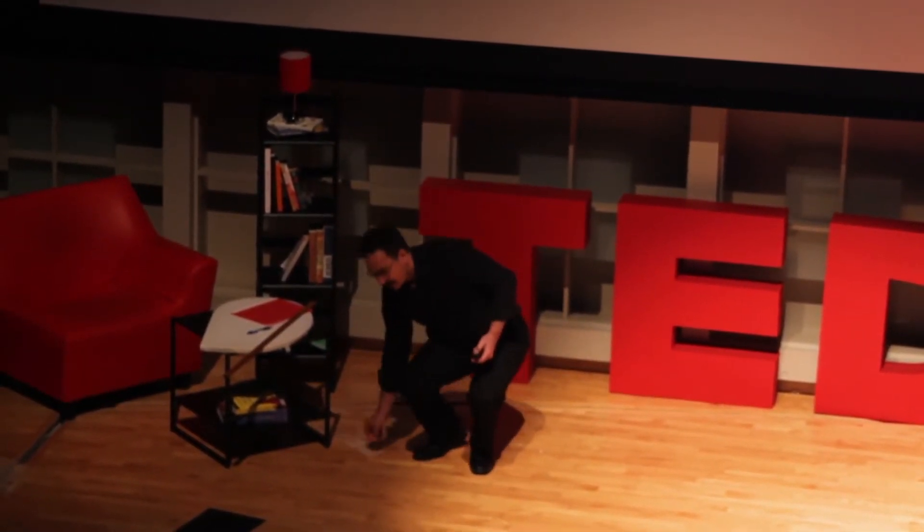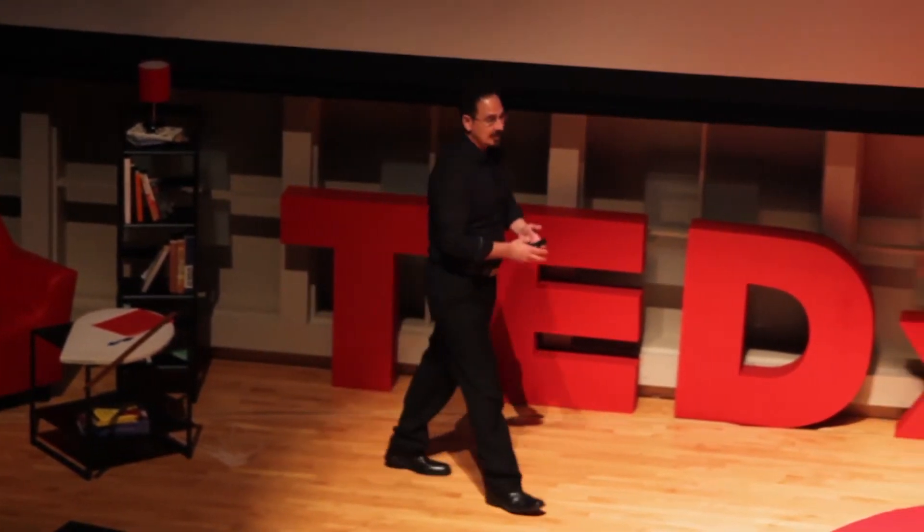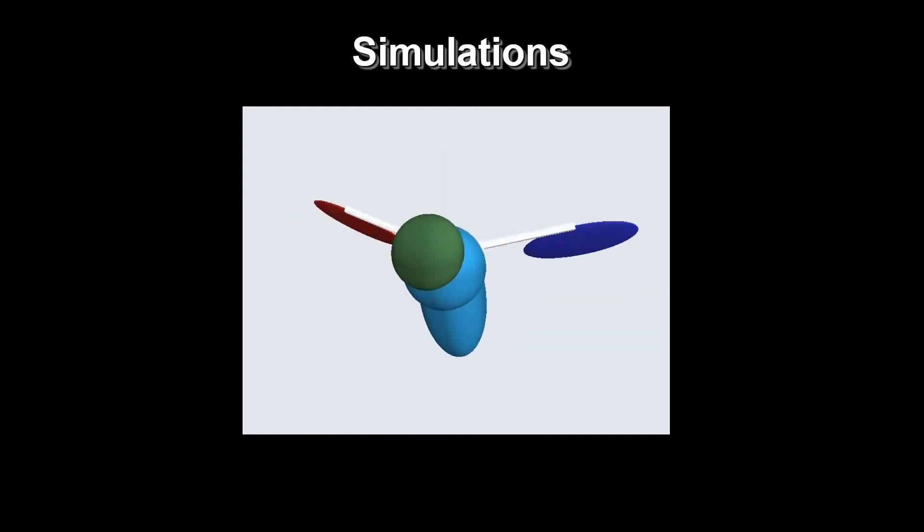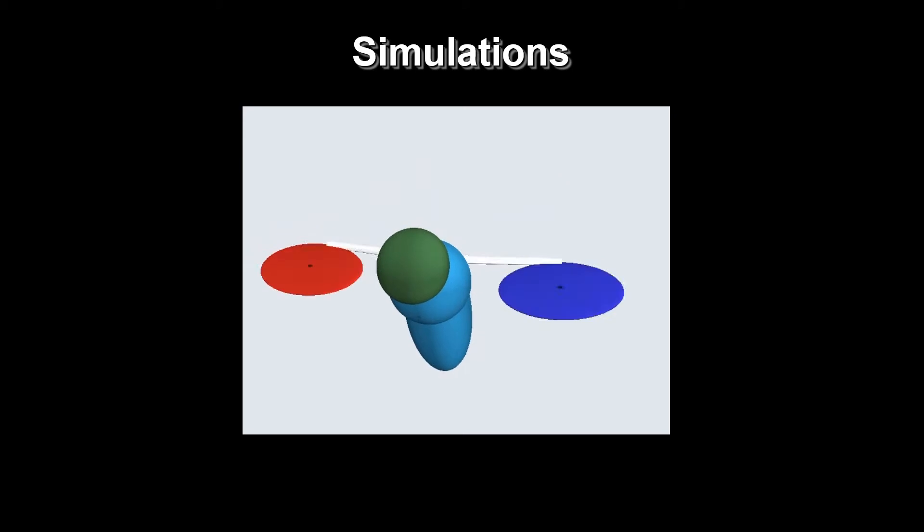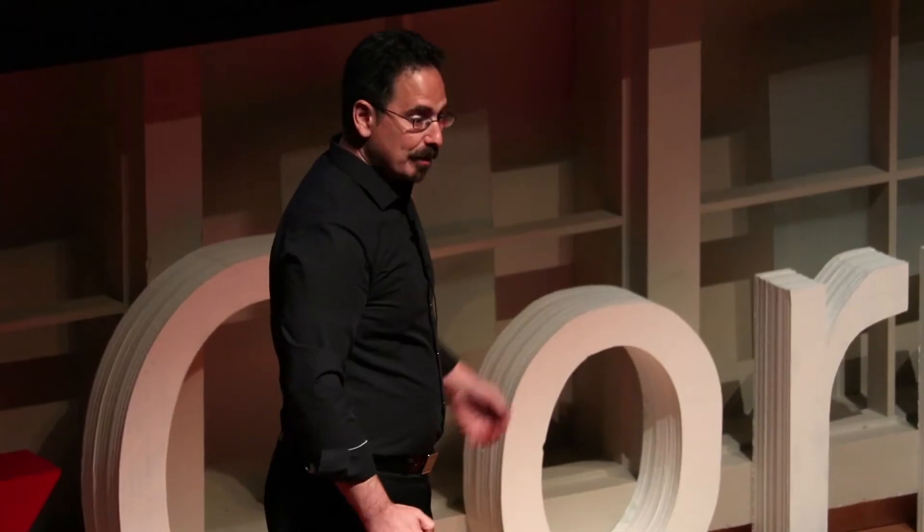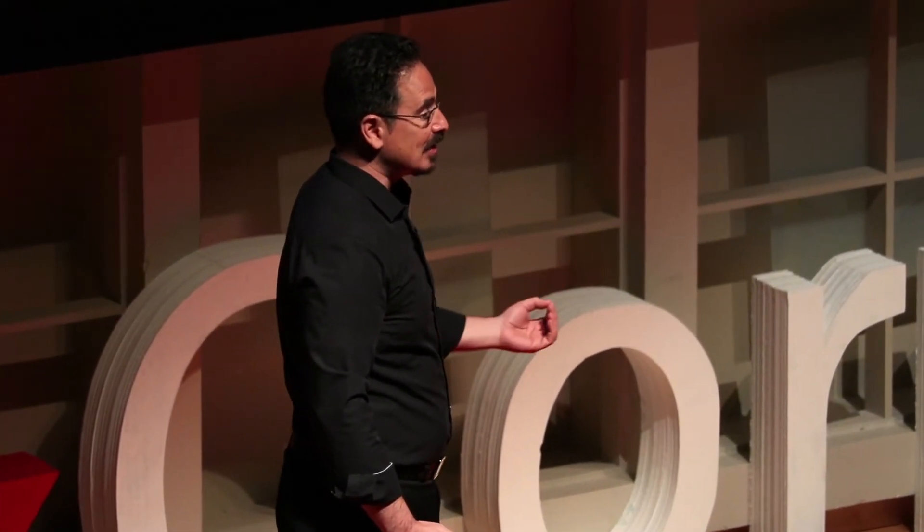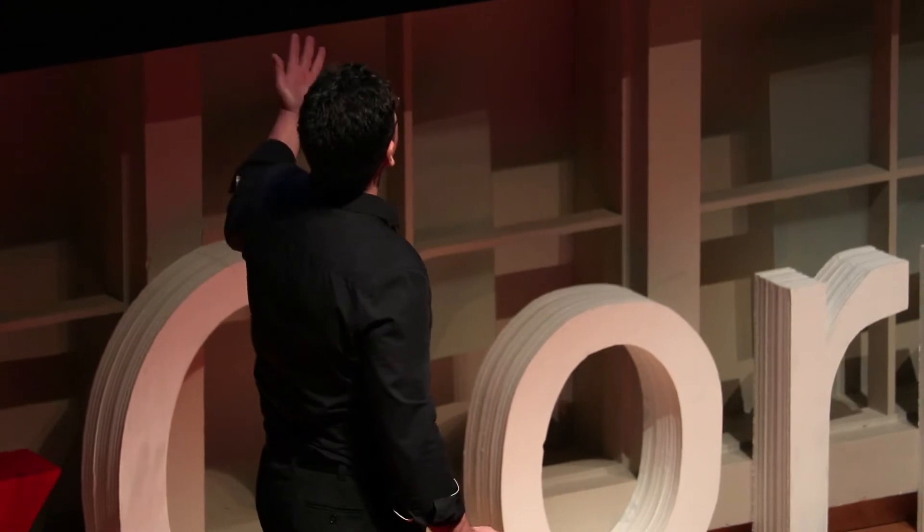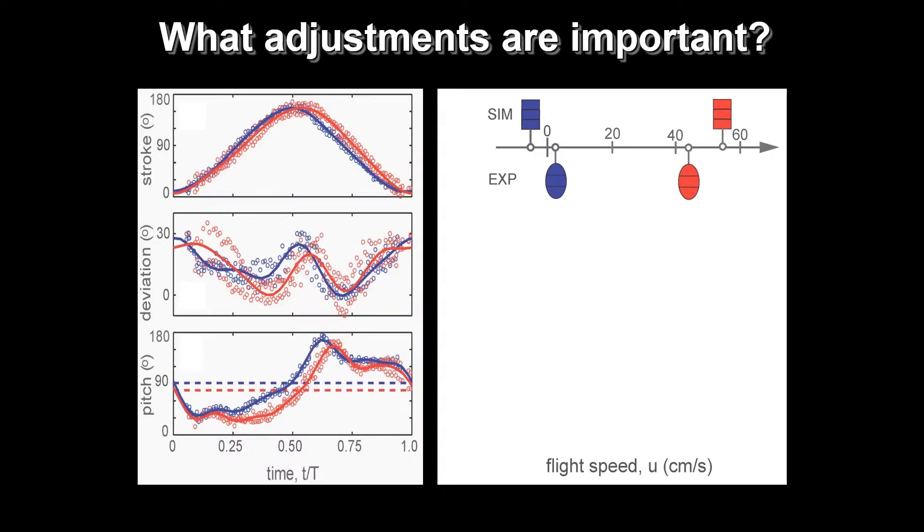Well, to try to answer that, we ran a bunch of simulations. What's nice is that if you run all of the red curves, the fast-moving fly wing strokes on the simulation, you can get a fly that moves forward. But the beautiful thing about simulations is that now we can mix and match. For example, if we take all of the blue curves from the hovering fly, we can generate a fly that, like the experiment, moves very very slowly.